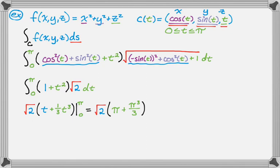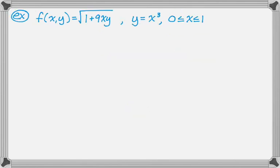I want to do one more example in this video and it's a little bit different. So we have f of x, y, so it's only two-dimensional which is nice, is the square root of 1 plus 9xy. And instead of being given a parameterized curve, we're going to have to parameterize it. So we have y equals x cubed and x goes from 0 to 1. So we need to write our own parametrics for this curve.